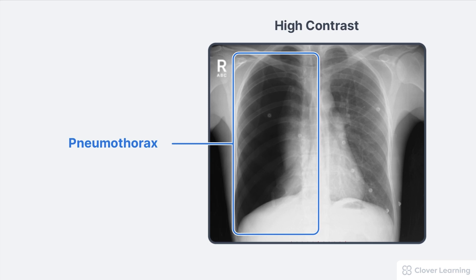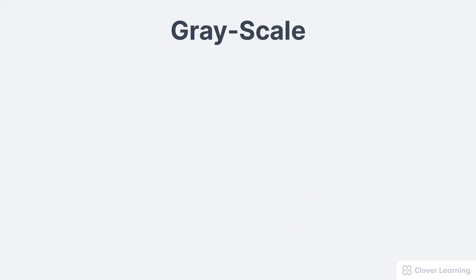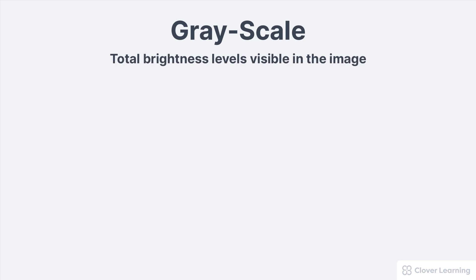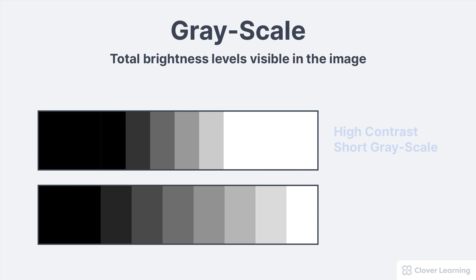For proper diagnosis, an image needs to be the right amount of contrast to visualize the anatomy — not too much and not too little. The term contrast is very closely related to other terms. For example, grayscale describes the total brightness levels visible in the image. A high contrast image has a short gray scale, meaning there are only a few shades of gray and a lot of black and white.